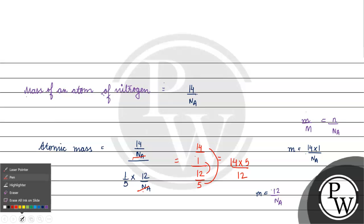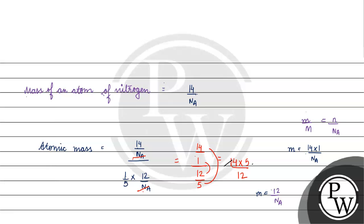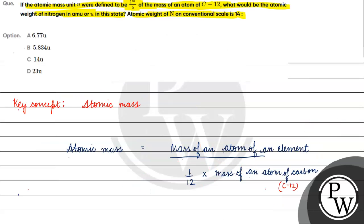So, 14 times 5 divided by 12 gives us 35/6 U. The correct answer for this question is option B, which is 5.834 U. I hope you understood it well. Thank you.